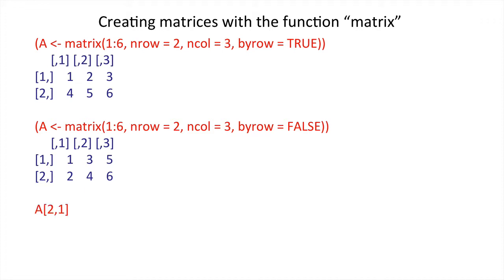How do we find out what the individual elements are in any given matrix? We refer to the row address and the column address. So A[2,1] refers to the second row and the first column. So that's two.